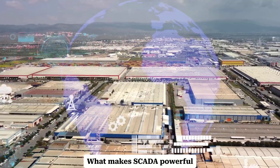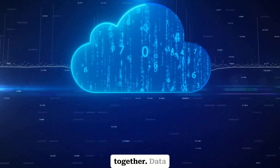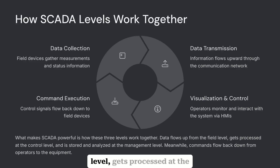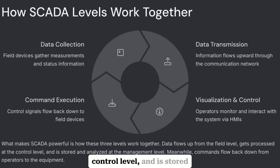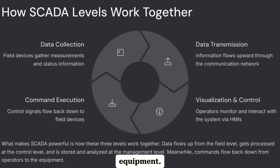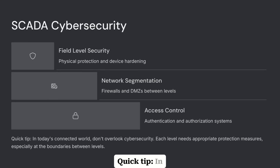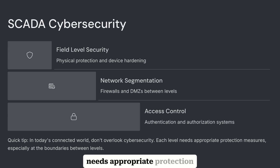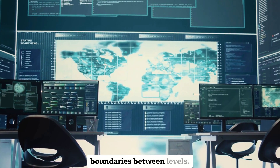What makes SCADA powerful is how these three levels work together. Data flows up from the field level, gets processed at the control level, and is stored and analyzed at the management level. Meanwhile, commands flow back down from operators to the equipment. In today's connected world, don't overlook cybersecurity — each level needs appropriate protection measures, especially at the boundaries between levels.